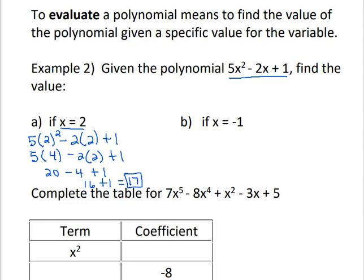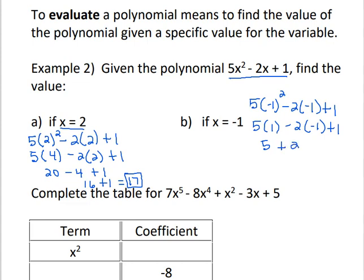Now evaluate the same polynomial when x is negative 1: plug in negative 1 for x in both places. Following order of operations, do the exponent first: negative 1 squared becomes positive 1. So 5 times 1 gives 5. Then negative 2 times negative 1 becomes positive 2, plus 1. So 5 plus 2 is 7 and 7 plus 1 is 8.